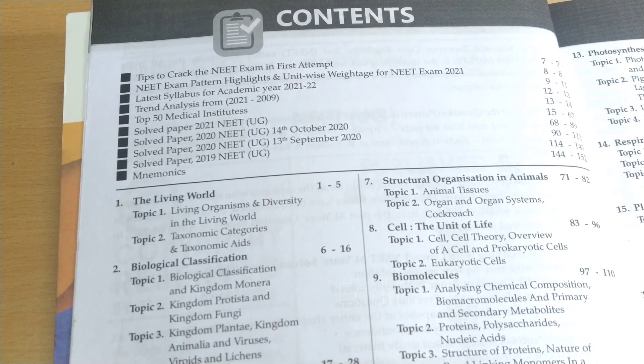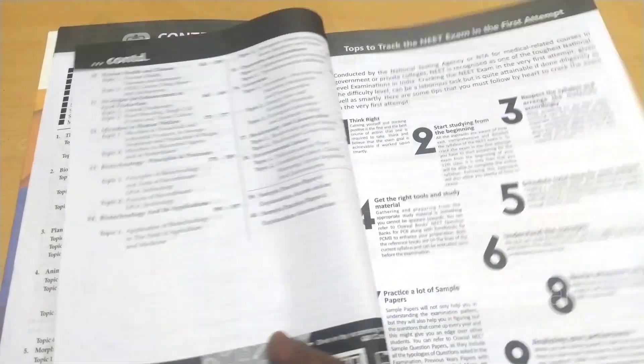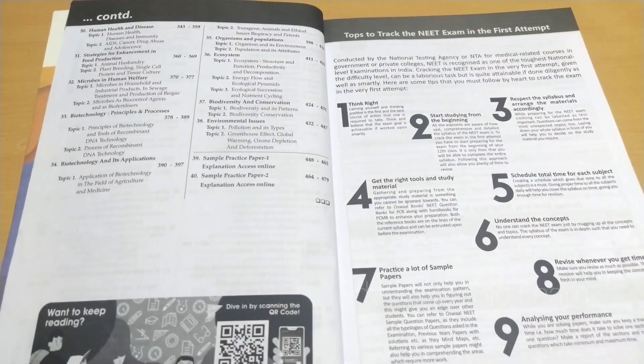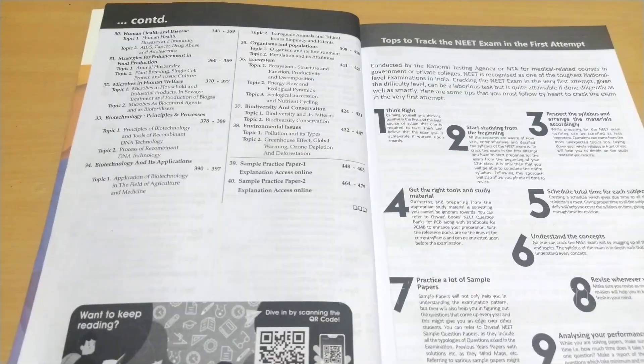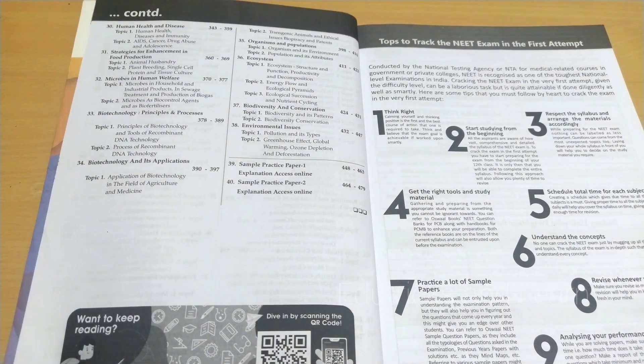The highlights, trend analysis, top 50 medical institutions, etc. are given, and they've given the complete content of this book. At last, they've given two sample practice papers for NEET exam and for subjective appendix they've given a QR code.